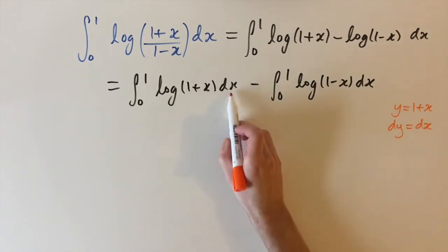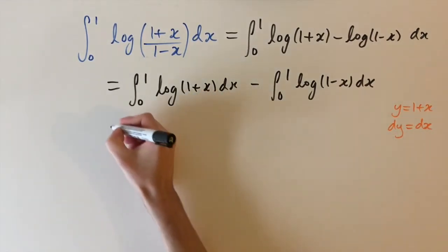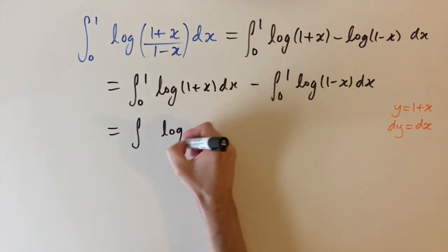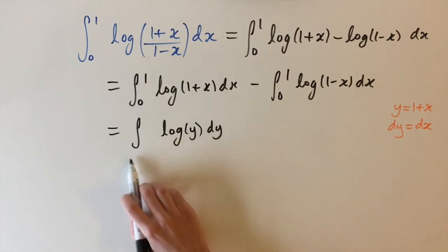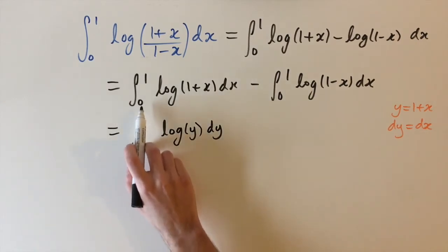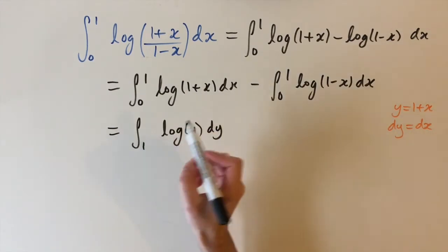So we can replace dx by dy and we can replace 1 plus x by y so this gives us the integral of log y dy which is much simpler but we need to see how the limits change now. So just putting 0 and 1 into this first equation this gives us the limits of 1 and 2.